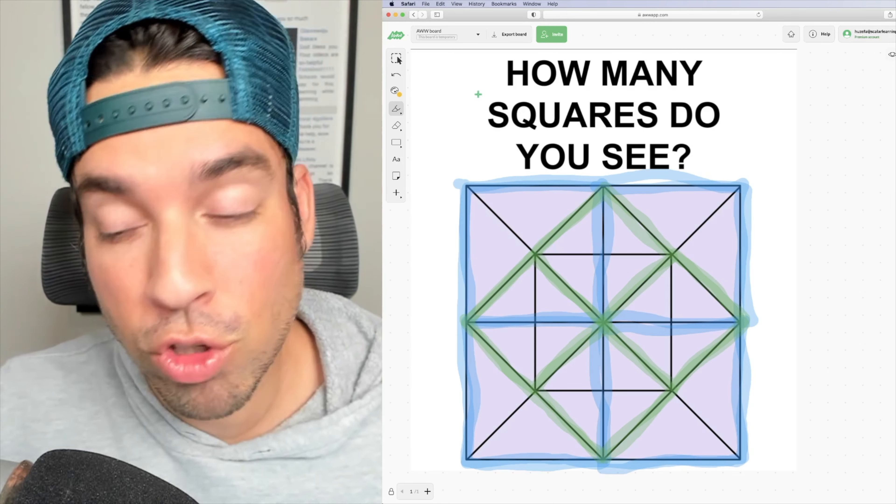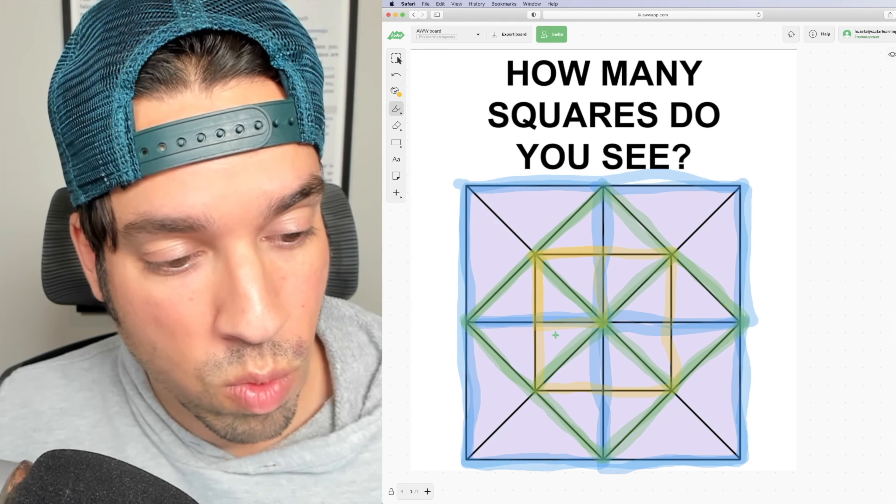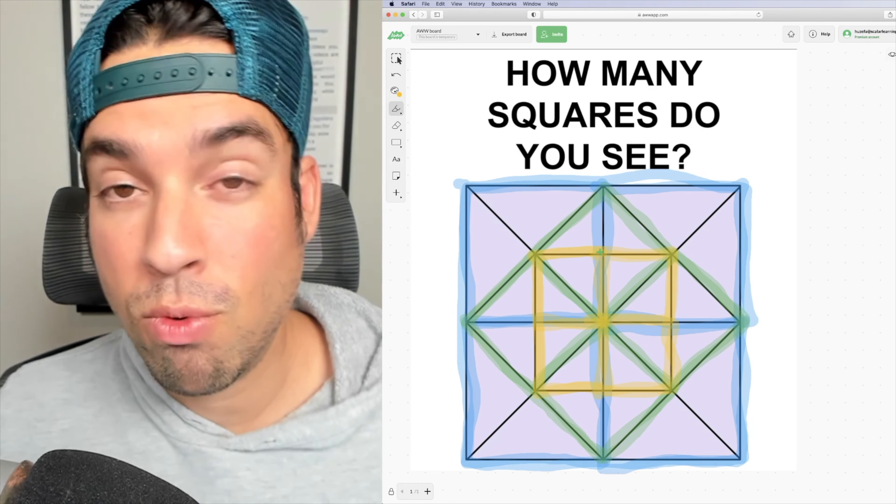Last but not least, we've got that middle square. And we've got these squares contained within that guy. One, two, three, and four.